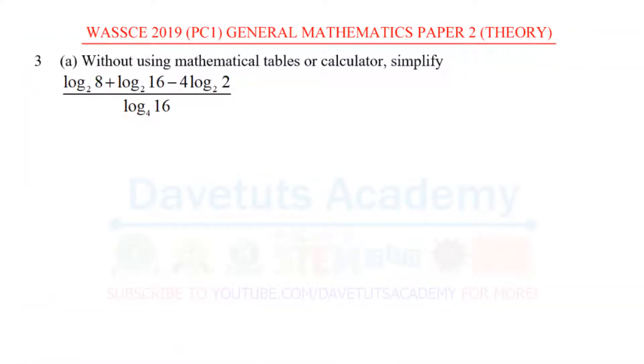Without using mathematical tables or calculator, we have to simplify log to base 2 of 8 plus log to base 2 of 16 minus 4 log to base 2 of 2, all divided by log to base 4 of 16.